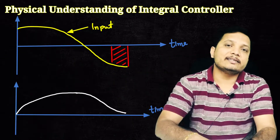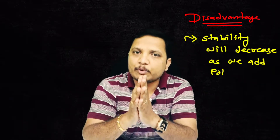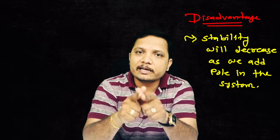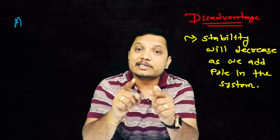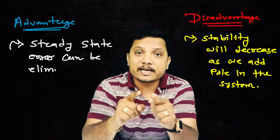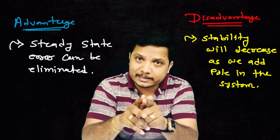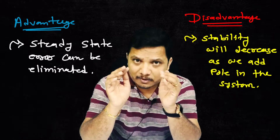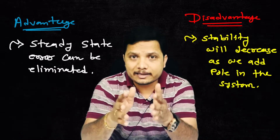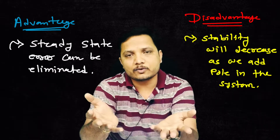The integral controller adds an additional pole to the system, which decreases system stability. However, the integral controller can eliminate the steady state error, also called offset, in the steady state output. So the integral controller eliminates offset or steady state error, but it also adds some instability to the system as the order increases. That is all about the integral controller.